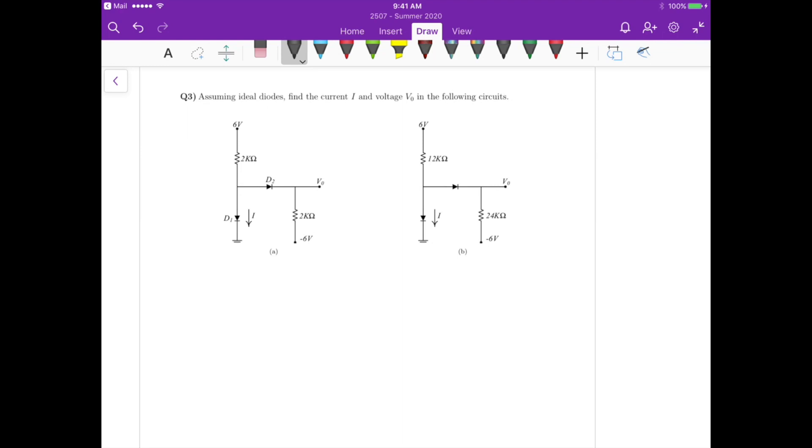So if we look at the circuit, the basic difference between them is the values of the resistors. So we have the same 6 volts up there, we have the same minus 6 volts down there on the 2K or the 24K, and the voltage V0 is in the same place. The current I1 is the same current that is flowing through, if we assume that they are the same. We can do that to simplify the problem.